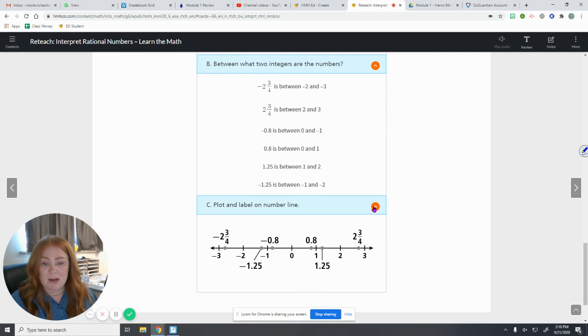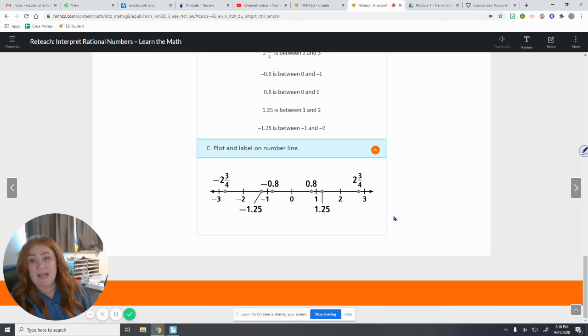And then if we plotted them on a number line, we can see here's 8 tenths on both sides, positive and negative. 1.25 and 2 and 3/4 on both sides. So go ahead and do the reteach part and let me know if you have any questions.